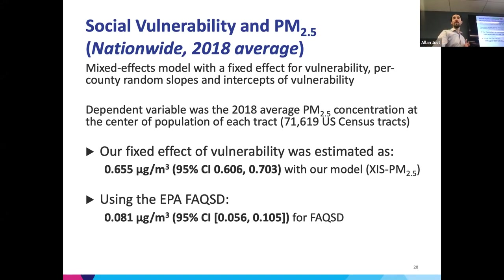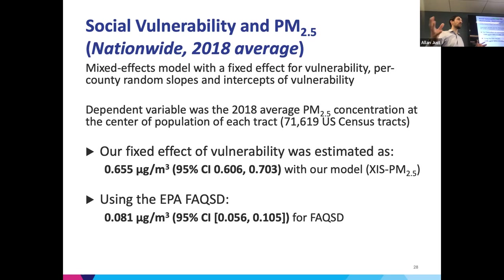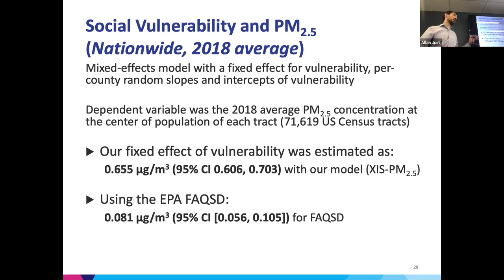When we do this analysis with PM2.5, we calculated the 2018 average at every census tract, constructing daily predictions then averaging them for the year 2018. What we find with our model is that the fixed effect associated with vulnerability is essentially eight times greater than if you use the EPA's product. We've also done pilot analyses with a colleague who linked our data to large mortality datasets and saw that if you use other sources of temperature data, you would underestimate the exposure-response function for extreme temperatures and mortality.